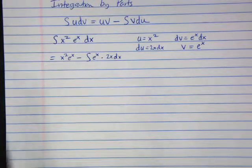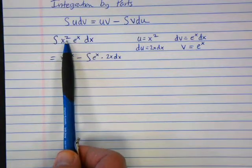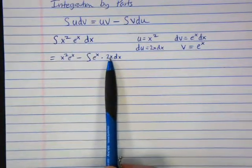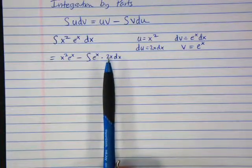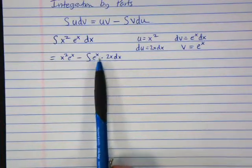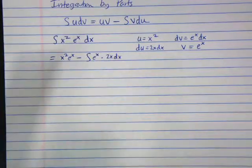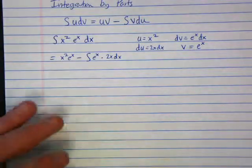If this started as x cubed and we got x squared at the next step, that would mean powers are getting bigger — that's bad. But we still have multiplication of e to the x times 2x, so we still have to use integration by parts again.